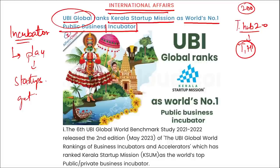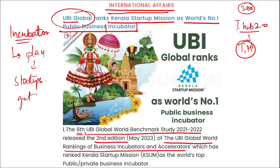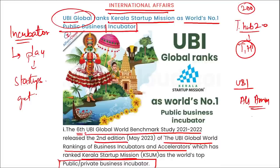This was the second edition of the UBI Global World Rankings of Business Incubators and Accelerators, which ranked Kerala Startup Mission as the world's top public-private business incubator. The honor was jointly received by the Secretary of Electronics and IT of Kerala. Regarding UBI Global, the CEO and co-founder is Ali Ameen and the headquarter is in Stockholm, Sweden.